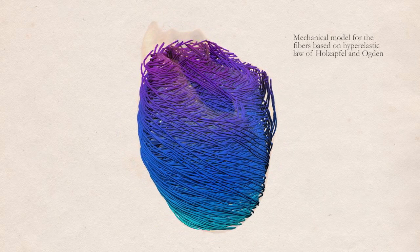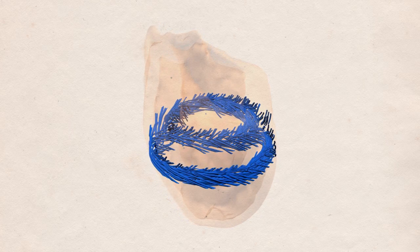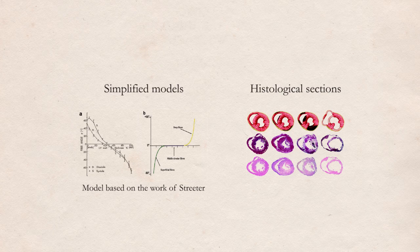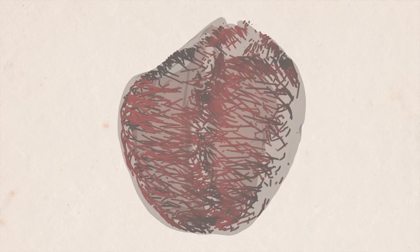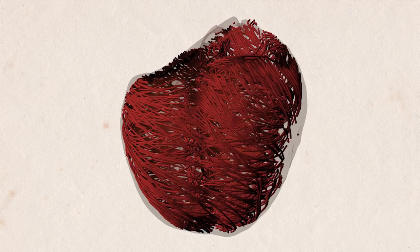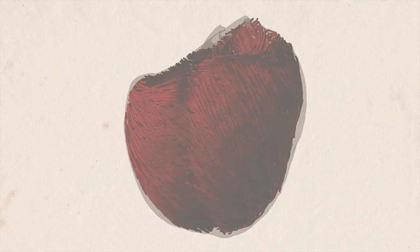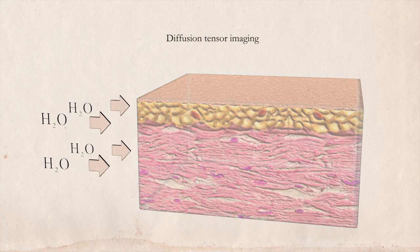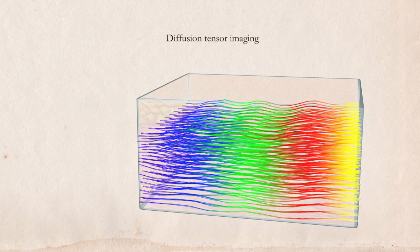Until very recently, the only way to describe cardiac fiber arrangements was with simplified models based on histological sections of animal hearts. Today, we can achieve a much better description of the fibers using a technique called diffusion tensor imaging, using magnetic resonance to map the diffusion of water molecules along biological tissues.